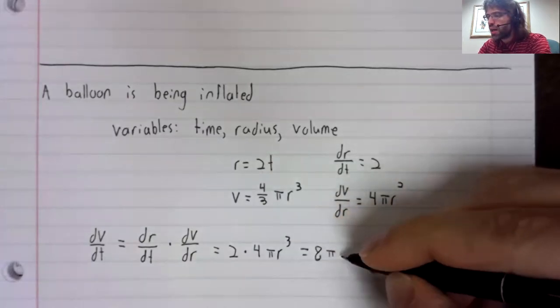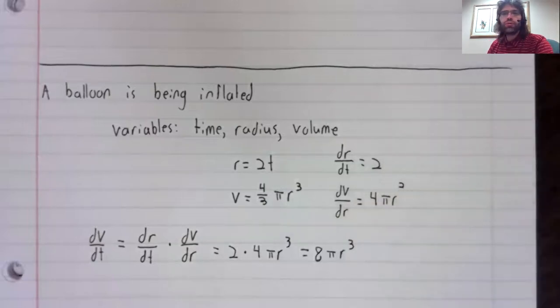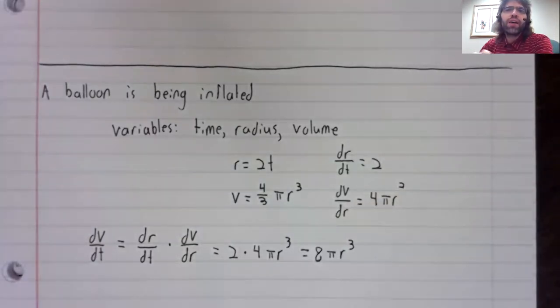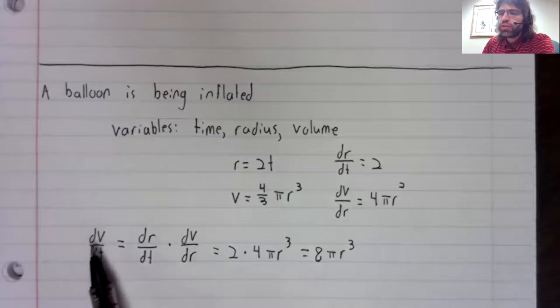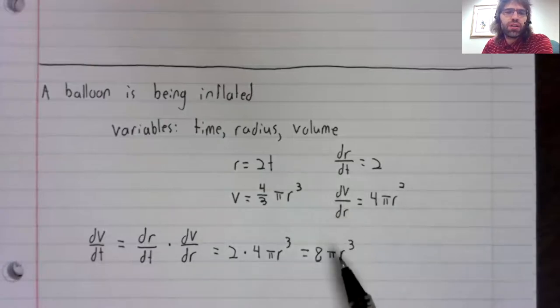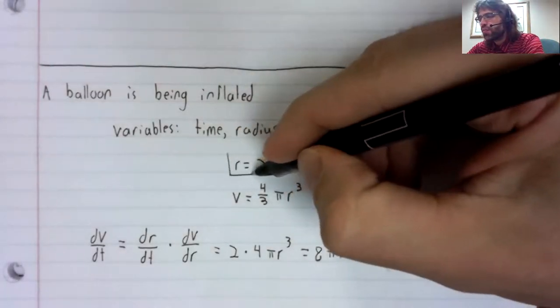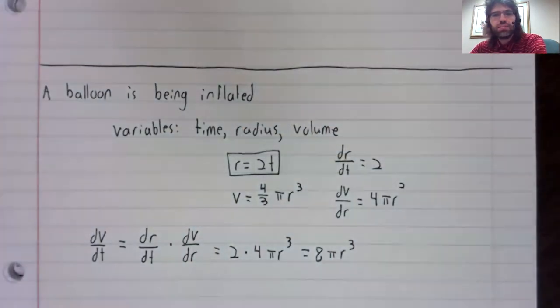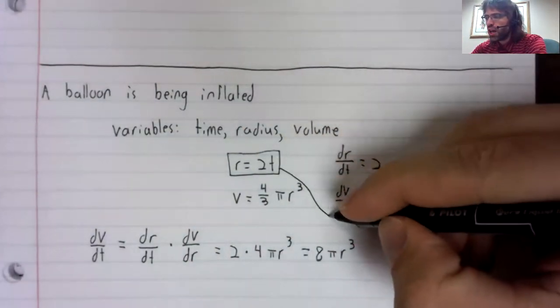Which is 8πr³. But whenever we use the chain rule like this, there's a final step. If we're looking for the derivative of the volume with respect to time, time ought to be our variable. What's this r doing here? We don't want that, we want time. Well, fortunately, we know what r is.